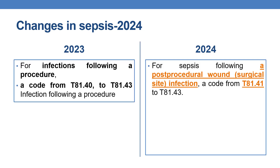First of all, coming to changes in sepsis. Previously, for infection following a procedure, you need to code a code from T81.40 — this is further expandable — to T81.43 for the infection following a procedure.